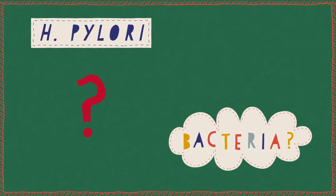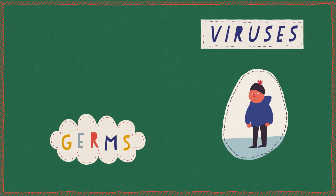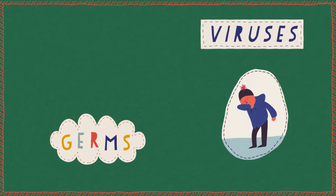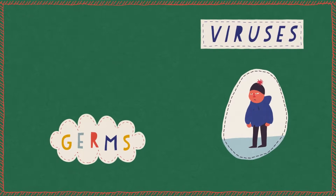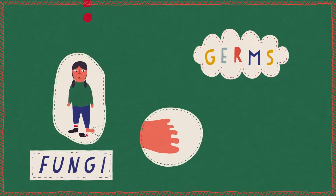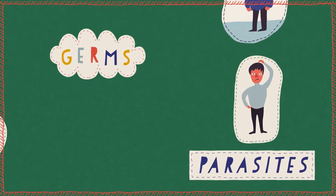Bacteria like H. pylori are not the only things that can cause disease. Other types of germs that can cause illness include viruses, which are the smallest type of germ — so small they are not complete life forms. Viruses can cause diseases like flu, the common cold, and chicken pox. Fungi, which include molds and yeast, can cause diseases like athlete's foot or yeast infections. And parasites, which are larger and more complex germs, can cause diseases like beaver fever and scabies rash.